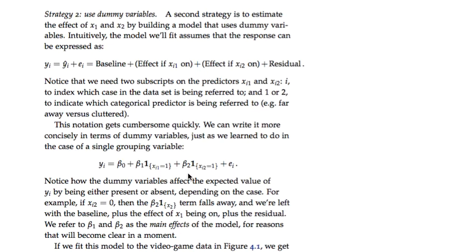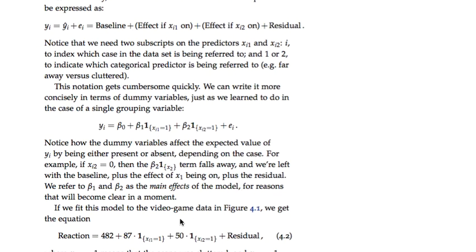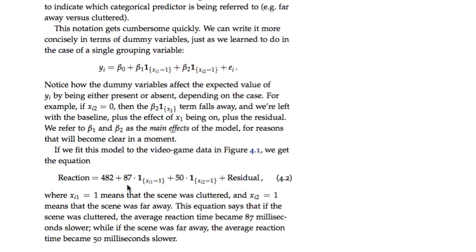The dummy variables are just telling you present or absent. Does this coefficient beta 1 come in or not? And does this coefficient beta 2 come in or not? We would call beta 1 and beta 2 the main effects of the model for reasons that we'll talk about in a second. Let's just say what those numbers would be if we fitted them by least squares to the data. You get a baseline of 482, a cluttered offset of about 87 milliseconds, and a far away offset of about 50 milliseconds. This is saying that if the scene is cluttered, on average the reaction time goes up by 87 milliseconds. If the scene's far away, on average it goes up by 50.